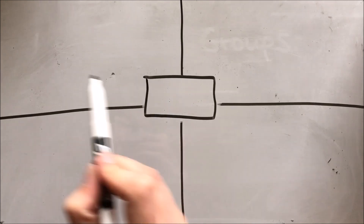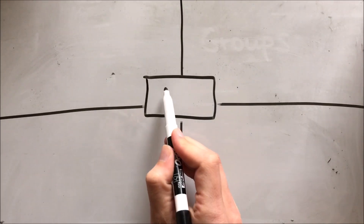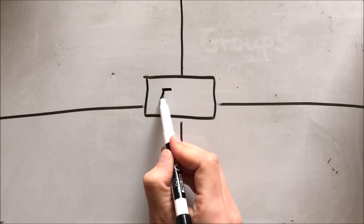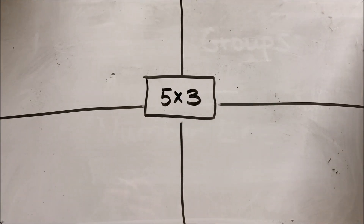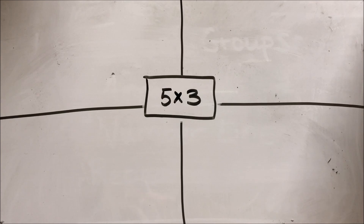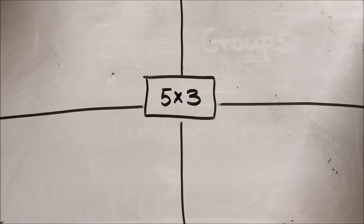We're going to draw four different ways to solve the problem: five times three. Now, you might already know what the product of five times three is, which is awesome! That means you've been really practicing your multiplication facts. Give yourself a pat on the shoulder. But I also want to make sure that you can look at a picture and identify what multiplication fact that picture is showing.